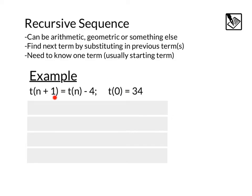Let's take a look at our example here. We have t(n + 1) = t(n) - 4. They're telling us t(0) = 34. That's like our starting point is 34. And this seems kind of confusing, but we're going to see how this actually works.